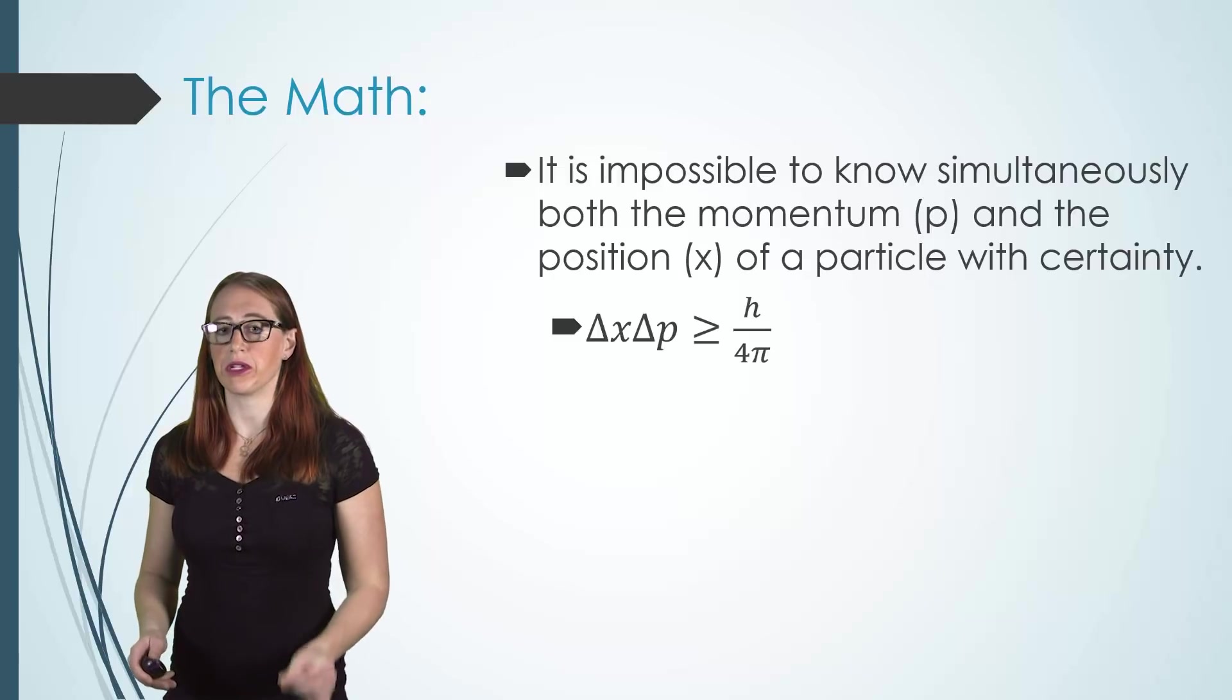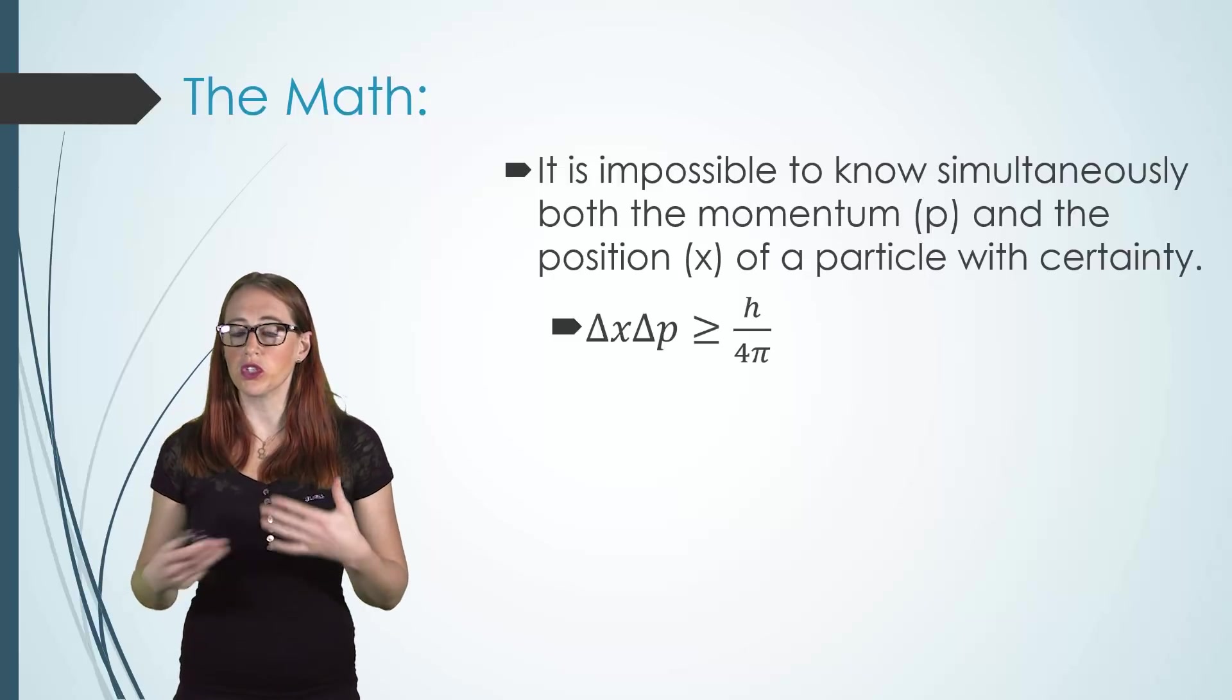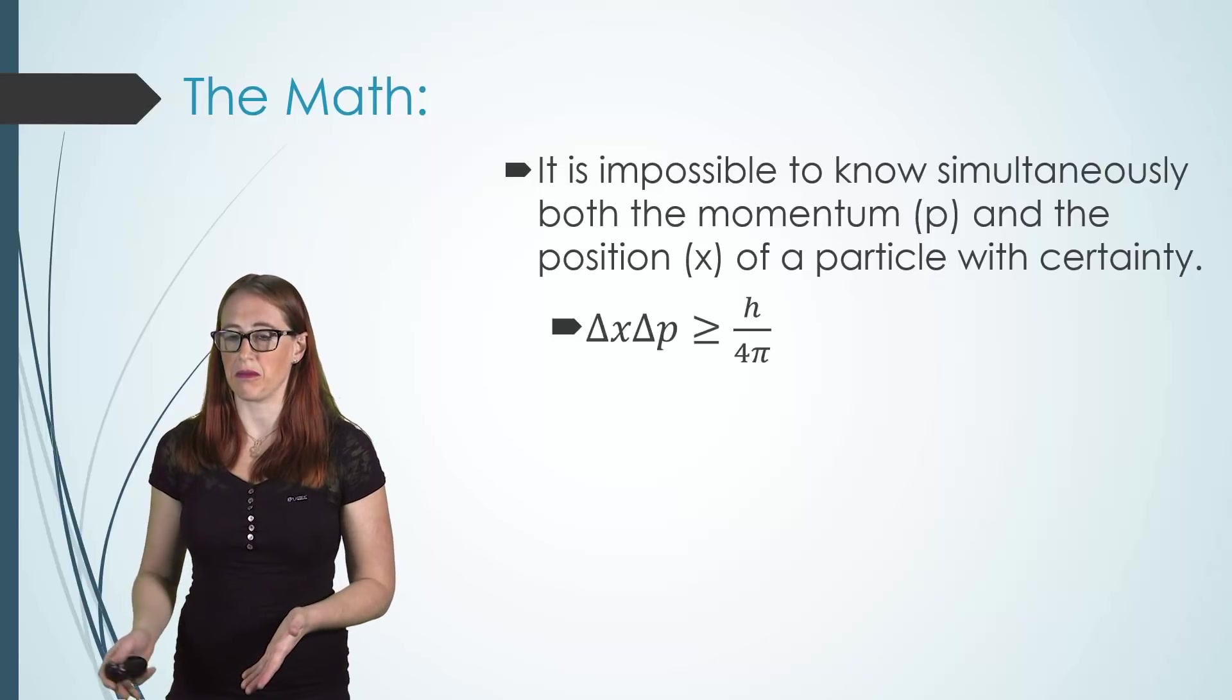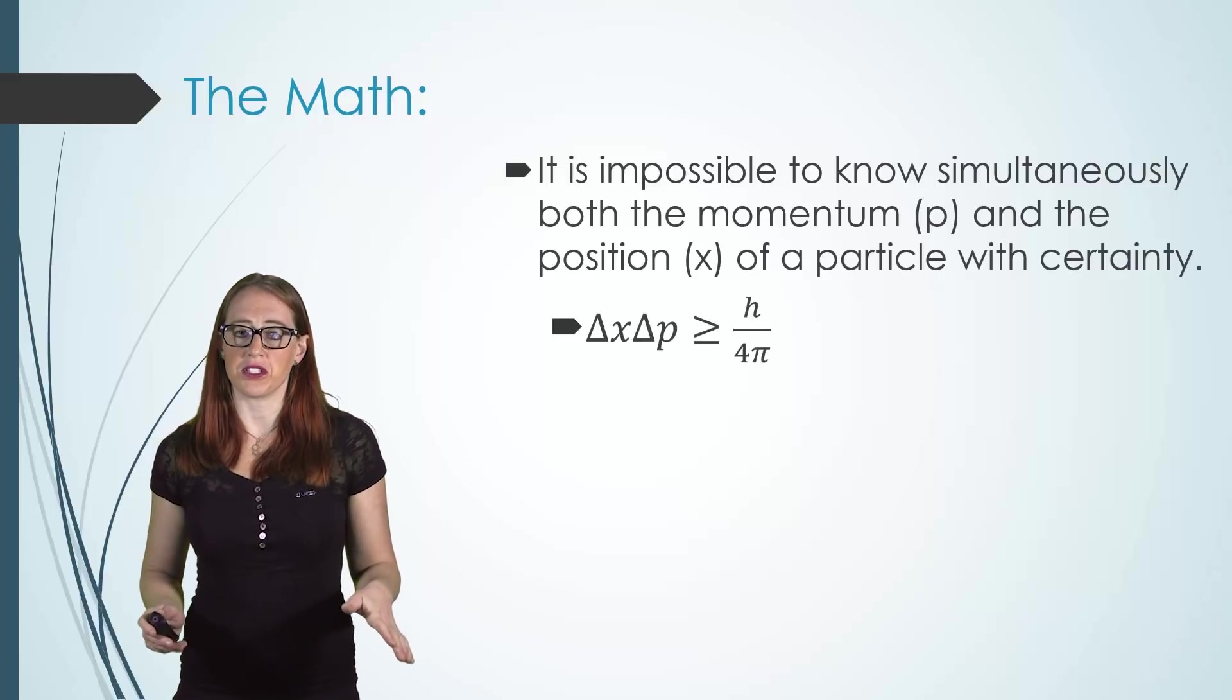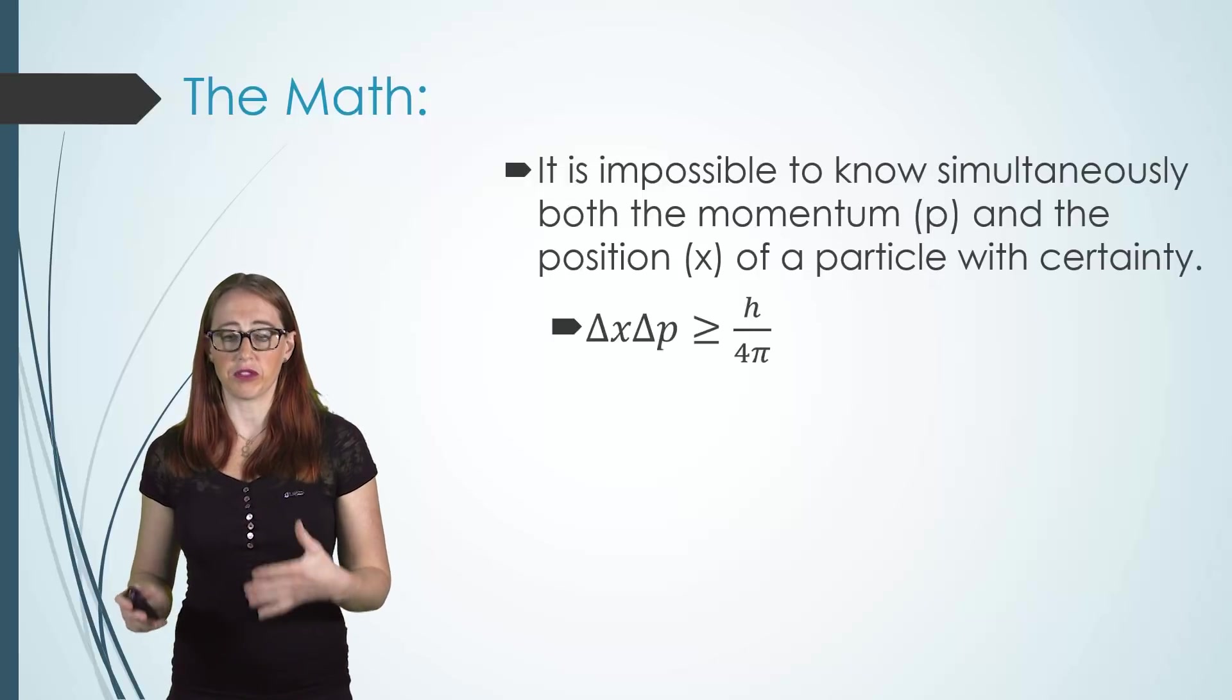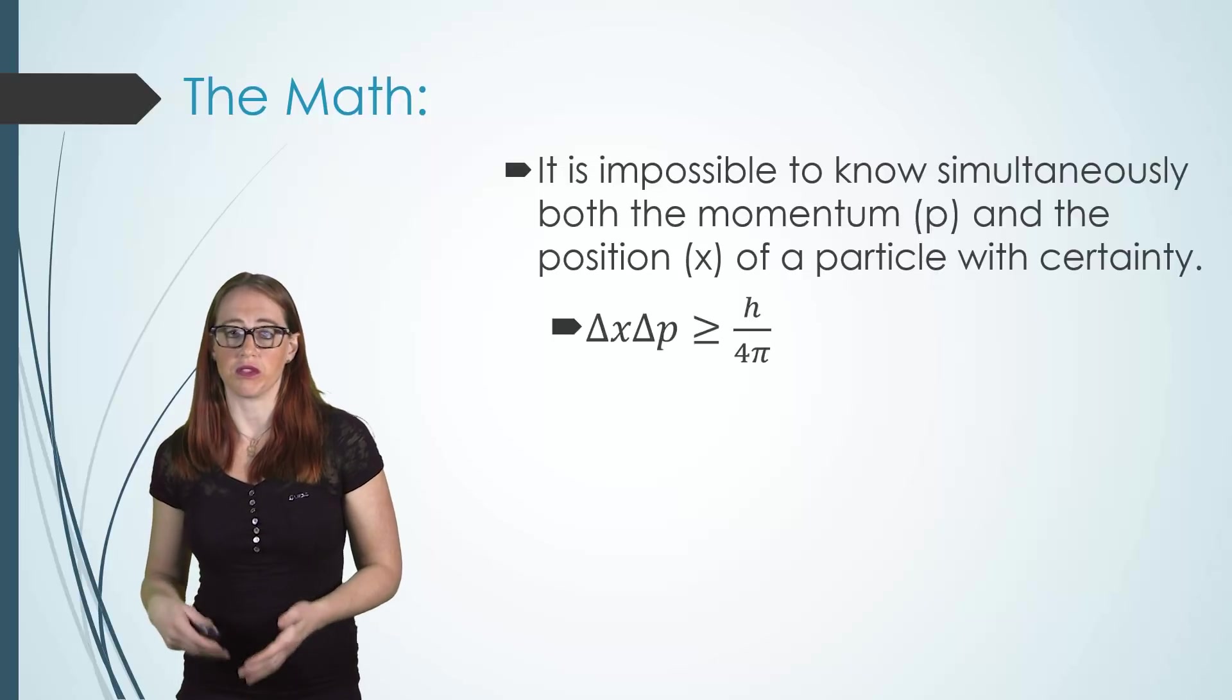Be careful to remember here that delta means uncertainty, not change. We're generally used to delta meaning change, but in this case it's the same symbol for a concept that's slightly different. This means that even if the measurements were done perfectly, the best you could possibly get for the combination of the positions and the momentum would be h over 4π.